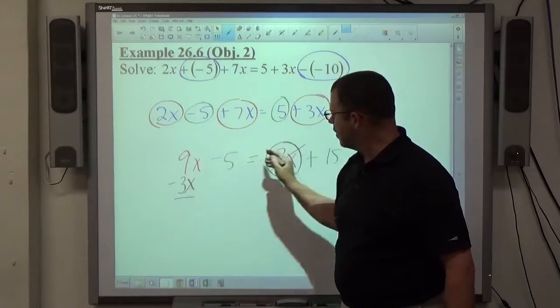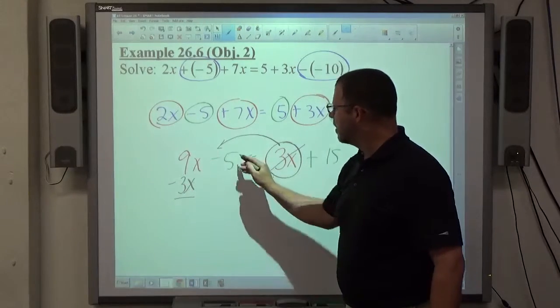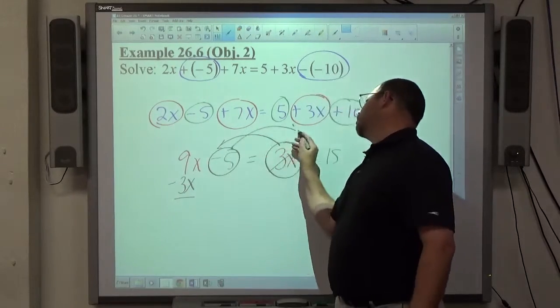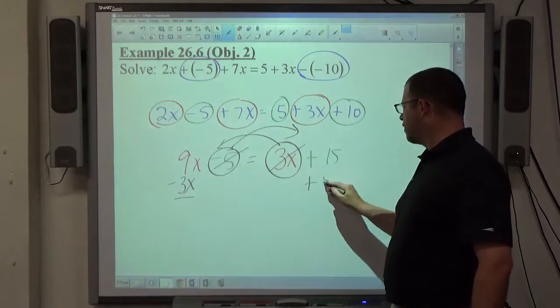Positive 3x moves across the equal sign, becomes a negative 3x. Negative 5 moves across the equal sign, making it a positive 5.